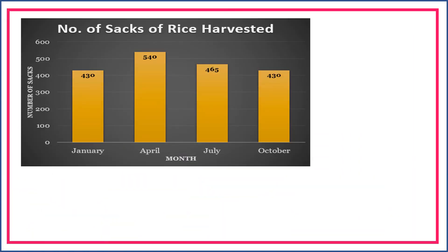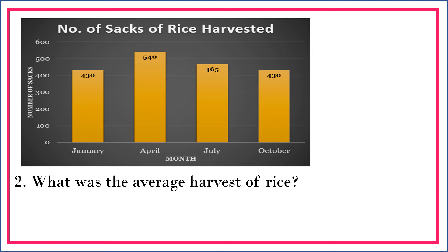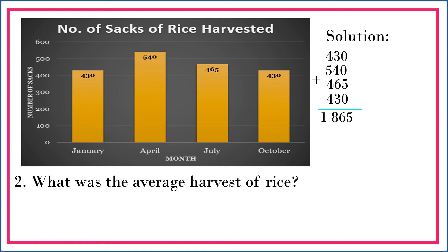Next, we're going to answer question number two: what was the average harvest of rice? We add 430, 540, 460, 465, and 430, and the total is equal to 1,865. Then we divide by 4, because we added 4 items.